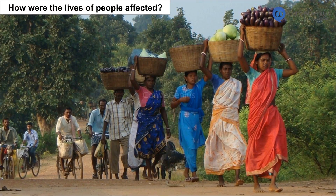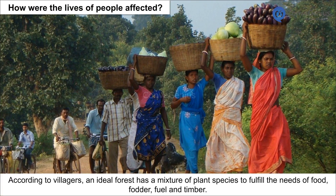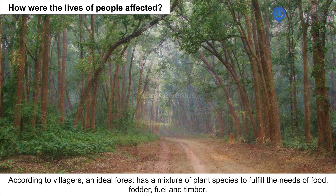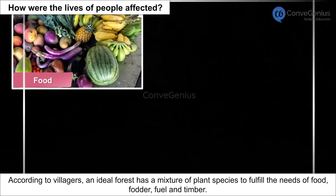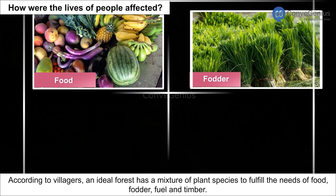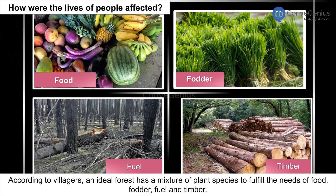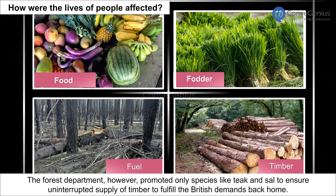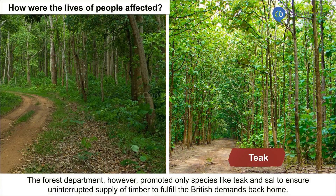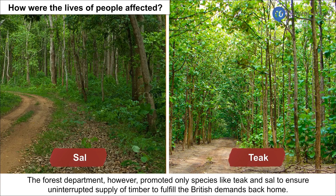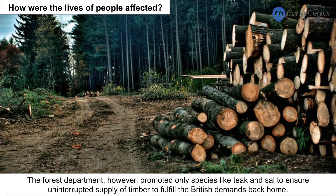How were the lives of people affected? According to villagers, an ideal forest has a mixture of plant species to fulfil the needs of food, fodder, fuel, and timber. The Forest Department, however, promoted only species like teak and sal to ensure uninterrupted supply of timber to fulfil British demands back home.